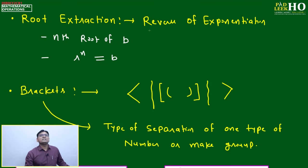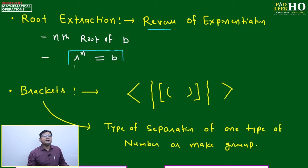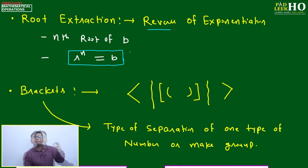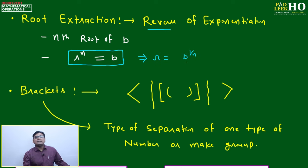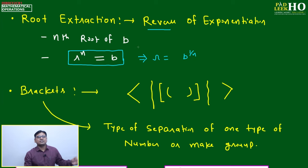Root extraction is just the reverse of exponentiation. For the nth root of b: if rⁿ = b, then r is the nth root of b. Written in radical notation: r is the nth root of b. Root extraction is simply the reverse process of exponentiation.